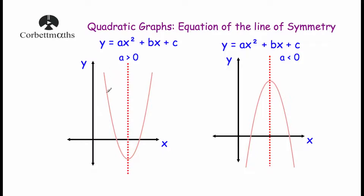A quadratic graph has this shape - it's called a parabola. It could be a u-shaped parabola if it's a positive x squared graph, for instance x squared or 5x squared. Or it could be an n-shaped parabola if it's a negative x squared graph, for instance minus x squared or minus 7x squared.